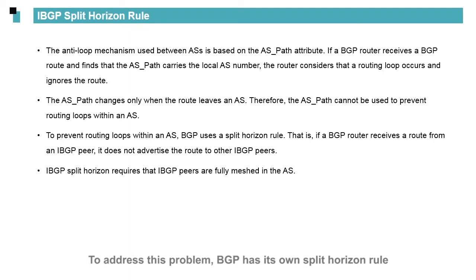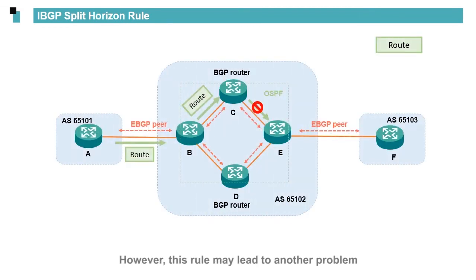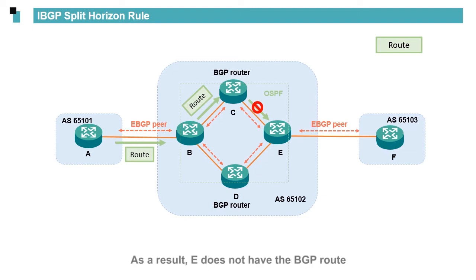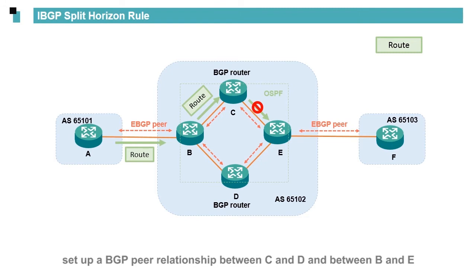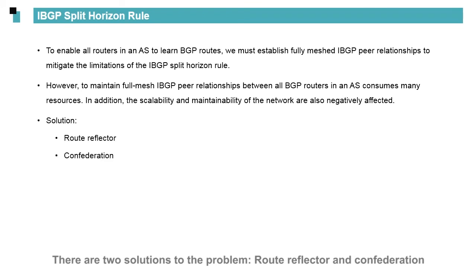To address this problem, BGP has its own split horizon rule: if a BGP router receives a route from an IBGP peer, it does not advertise the route to other IBGP peers. However, this rule may lead to another problem. For example, if BGP is also running on C and D, C does not send to E a route transmitted from A to B and then to C. As a result, E does not have the BGP route. To implement route interworking, you need to set up BGP peer relationships between C and D, and between B and E. If there are many BGP routers in the transit AS, the link load is heavy. The two solutions are route reflector and confederation, which will be covered later.